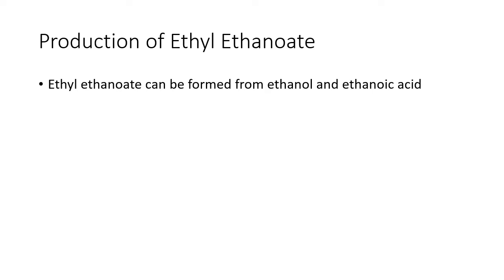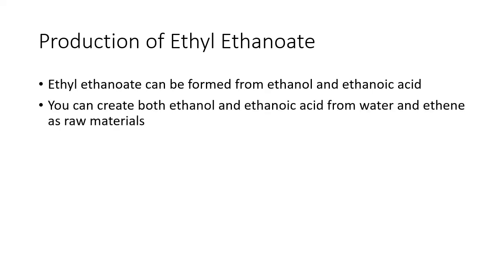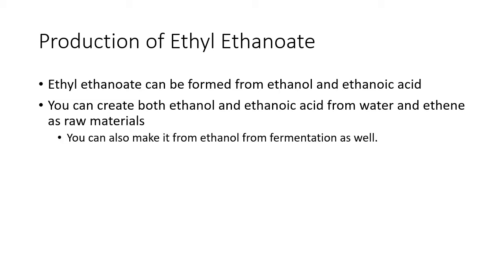Ethyl ethanoate can be formed from ethanol and ethanoic acid — that makes sense because it's an ester. You can create both ethanol and ethanoic acid from water and ethene as raw materials. You can also make ethanol from fermentation as well.